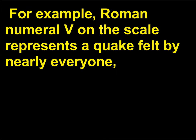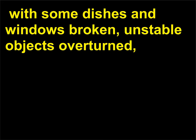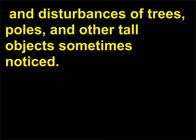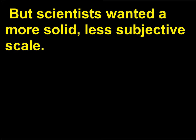For example, Roman numeral V on the scale represents a quake felt by nearly everyone, with some dishes and windows broken, unstable objects overturned, and disturbances of trees, poles, and other tall objects sometimes noticed. But scientists wanted a more solid, less subjective scale.